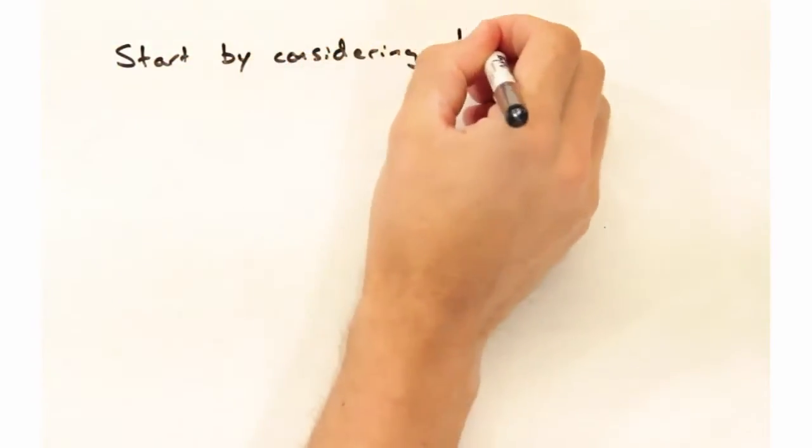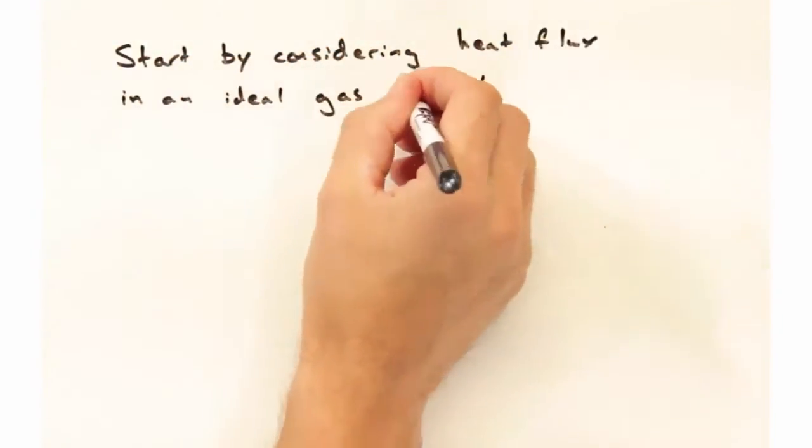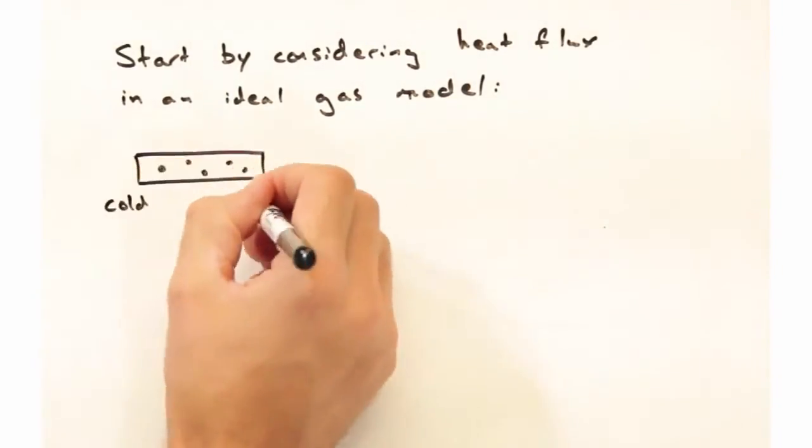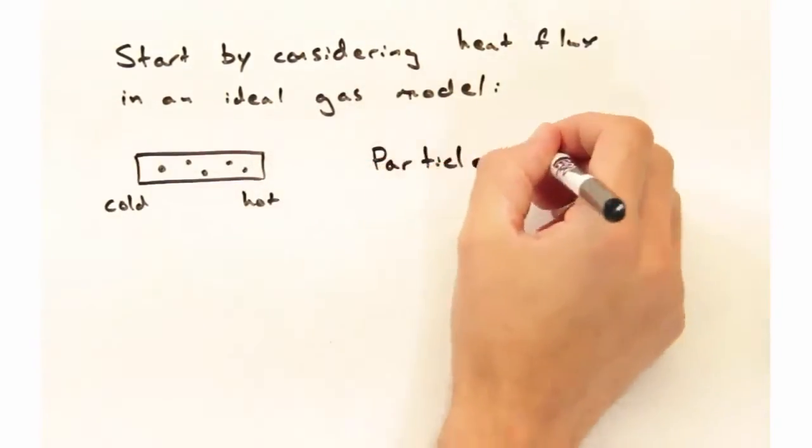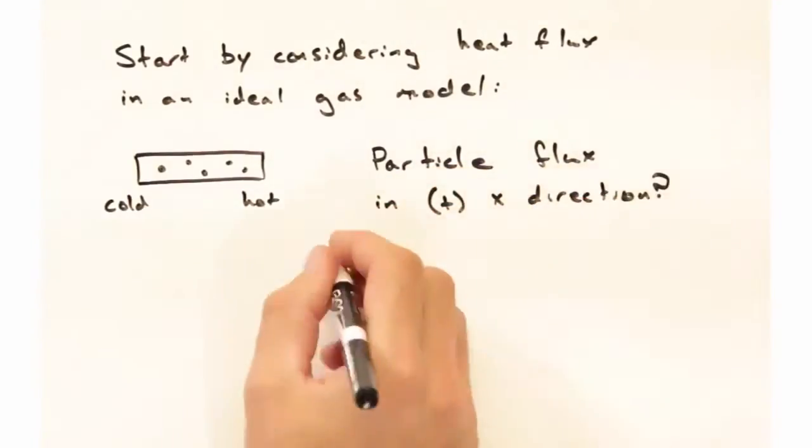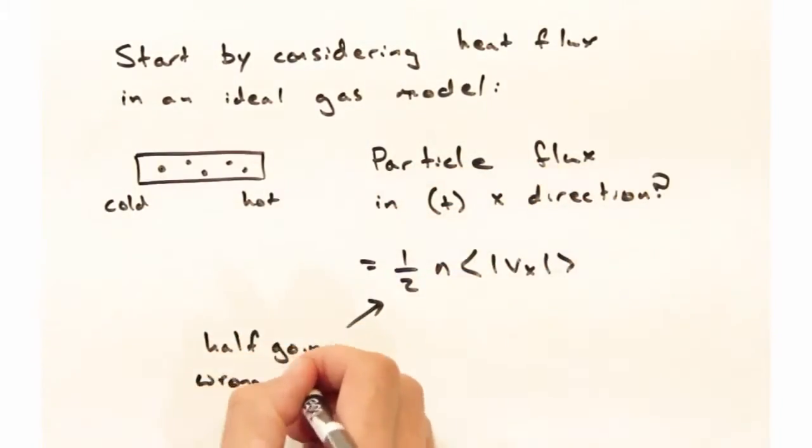With Fourier's law in mind, we're going to start by considering the heat flux using an ideal gas model. We're going to have particles in some sort of tube, and there's going to be a hot side and a cold side, and we're going to be thinking about the particle fluxes in this tube.